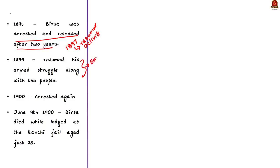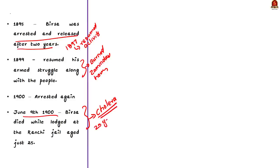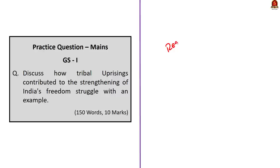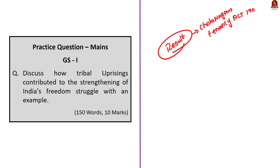In 1899, Birsa Munda resumed his armed struggle along with the people he had organized. He razed police stations, government property, churches, and even houses of zamindars. Finally, the British caught him in 1900 from Jamkopai forest, and he was jailed. Birsa Munda died on June 9th, 1900, while lodged at Ranchi Central Jail, at the age of just 25. The British declared that he died of cholera. The results of this Munda rebellion — also known as the Great Tumult — included the government recognizing the Chota Nagpur Tenancy Act of 1908, recognizing the Khuntkatti rights of tribals, and banning beth begari (forced labor imposed on tribals).